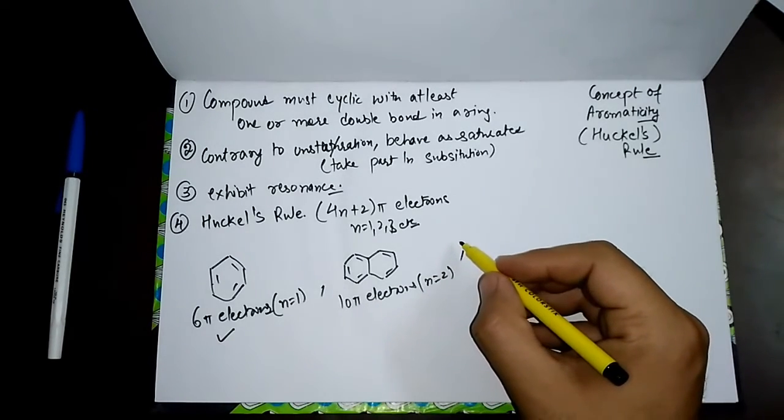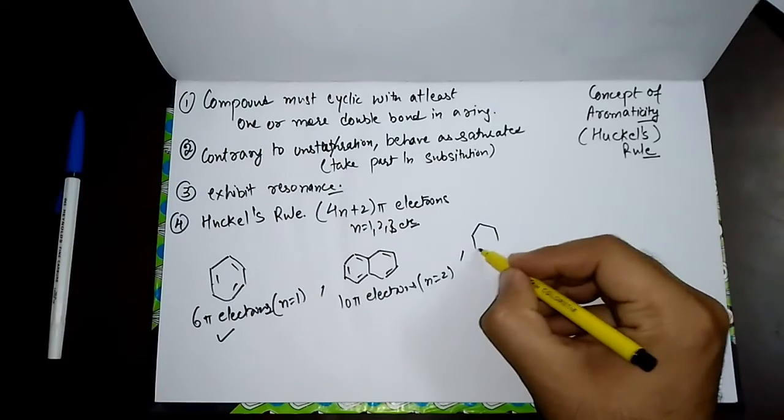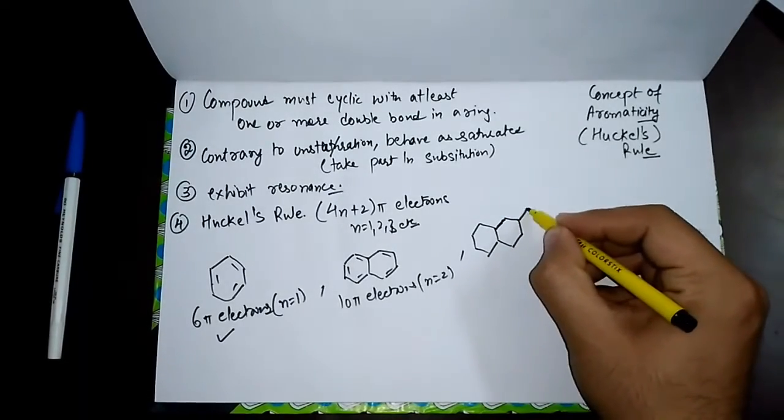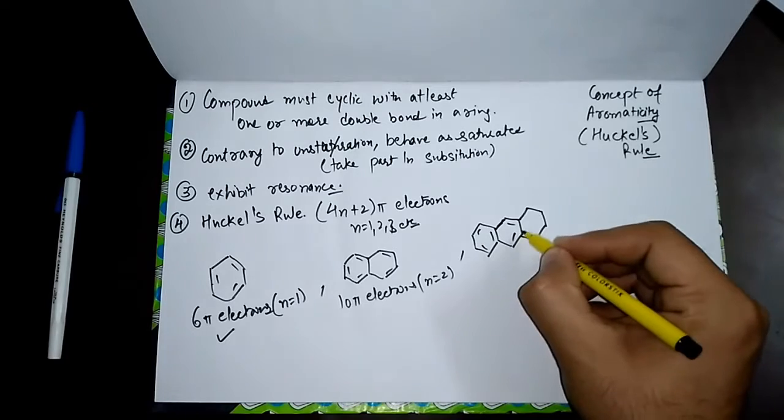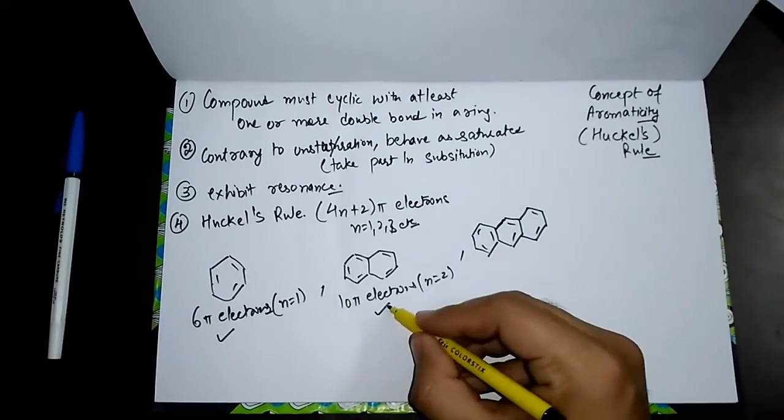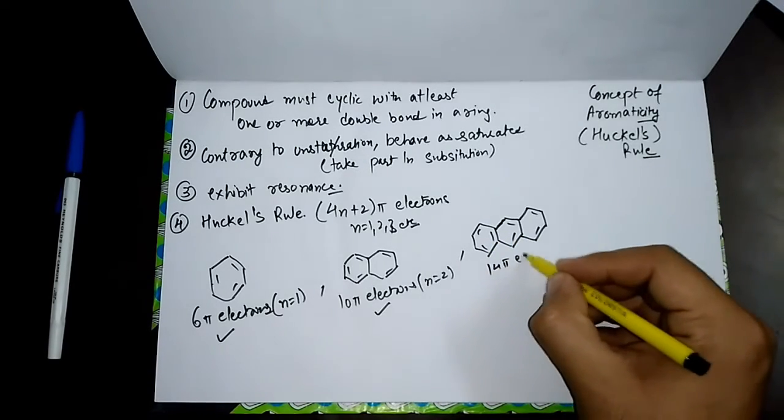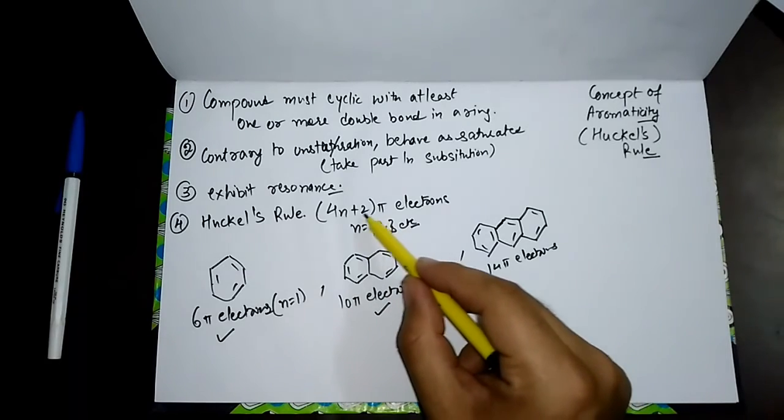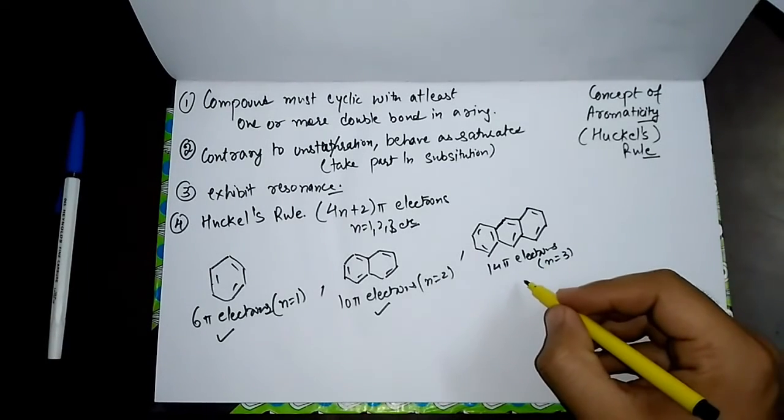Similarly, we have anthracene, which is 3 benzene rings fused together having alternating double bonds. If I count the pi electrons, we find it has 14 pi electrons. If the overall value is 14 pi, placing n equals 3, it will have 14 pi electrons. So we say it is a part of aromatic compounds.